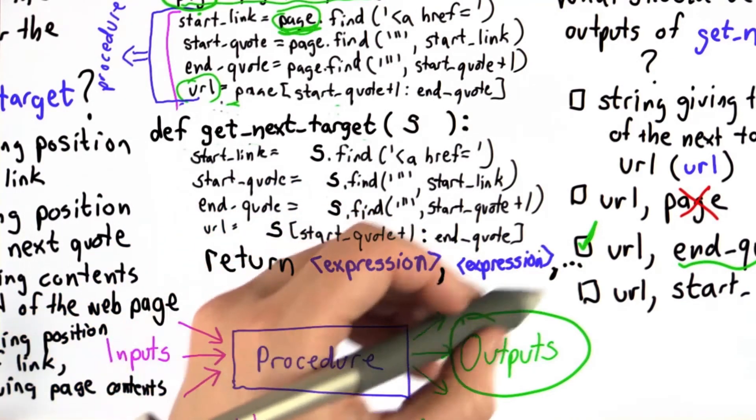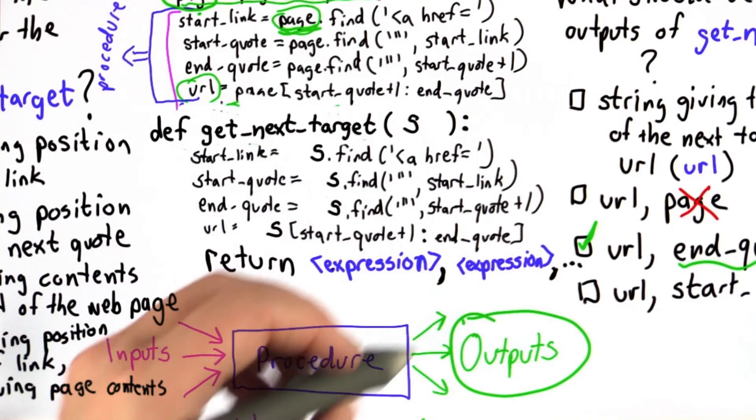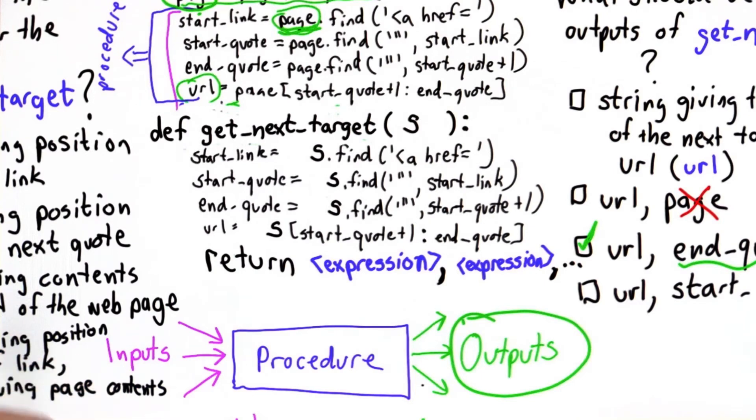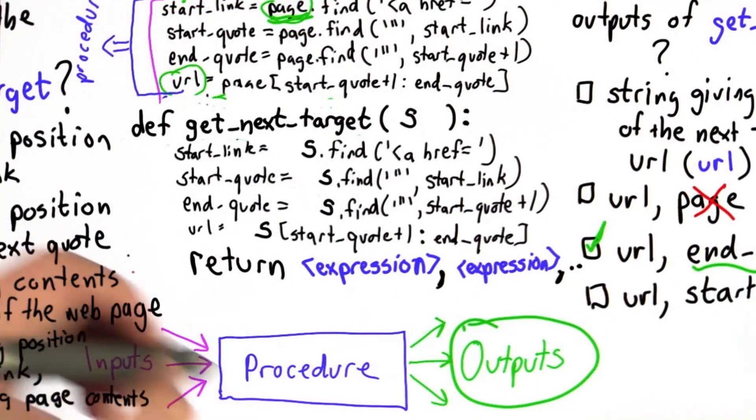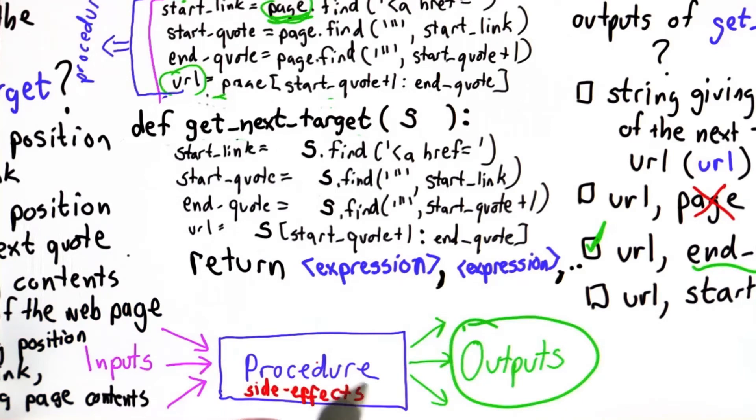We can have zero return expressions. That would mean there's no output. And it actually is useful to have procedures with no output sometimes. That's not true if we just think of procedures as things that map inputs to outputs. But procedures can also do other things. They can do what we call side effects. And what side effects are are things that we can see, but that aren't the outputs.